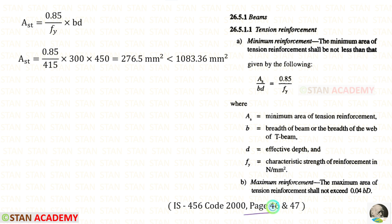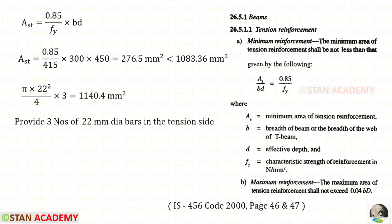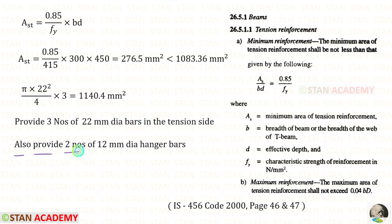From page number 46 of the code book, we apply the minimum Ast formula with all values. Our calculated Ast is greater than the minimum Ast, so we proceed with the calculated value. Trying three numbers of 22 mm diameter bars provides an Ast slightly greater than required, so we provide three 22 mm diameter bars on the tension side and two 12 mm diameter hanger bars.